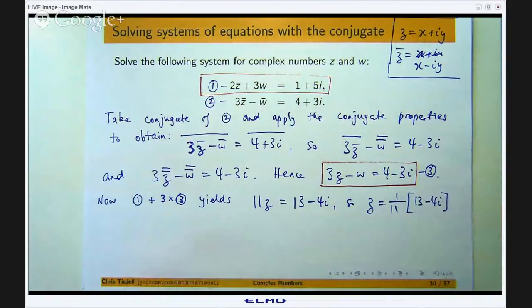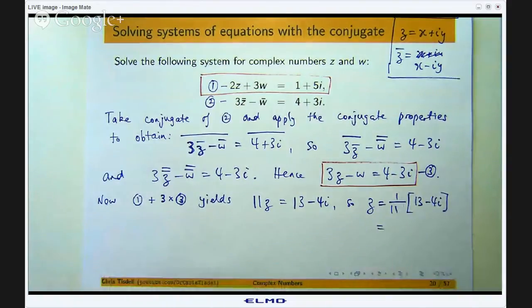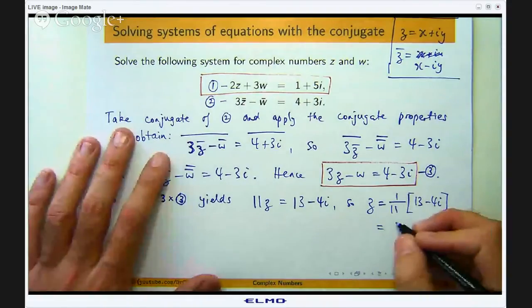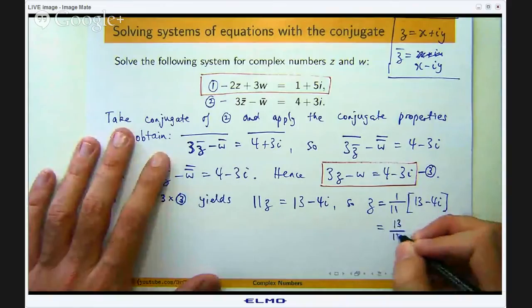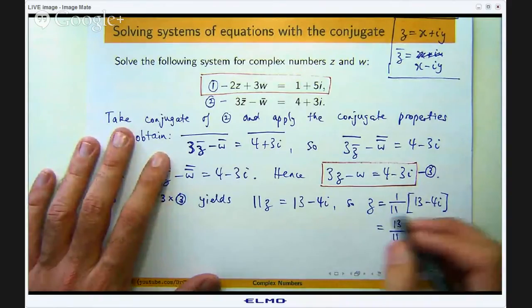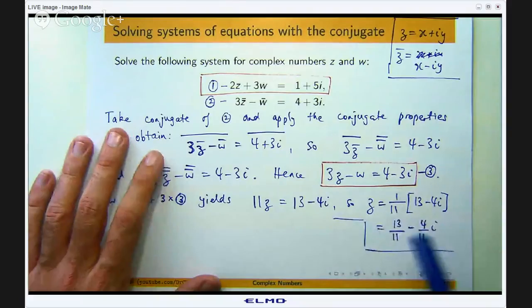Okay so if I want to put that in the x plus yi form then it will be something like this. So that is the Cartesian form, okay so I have got my z.